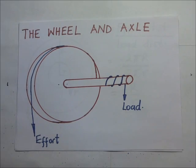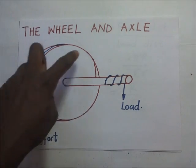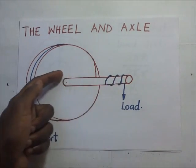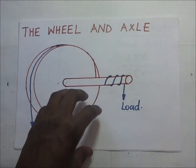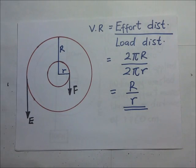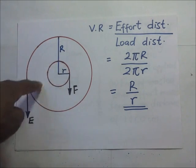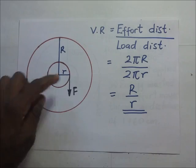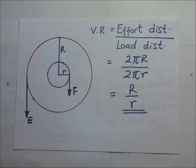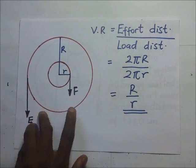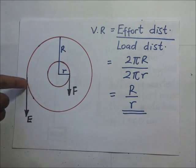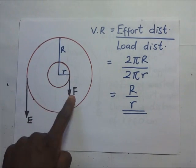It has what we call the load and the effort. The big part is the wheel and the smaller part is the axle. Looking at the cross-section of the wheel and axle, you see two concentric circles. The smaller circle represents the axle and the big circle is the wheel. The big circle has its own diameter, capital R, and the small one has its own diameter, small r. The effort E is applied on the large circle, and the load F is on the small circle.